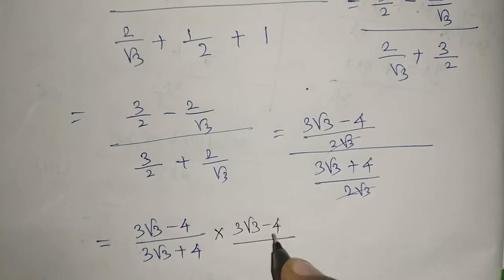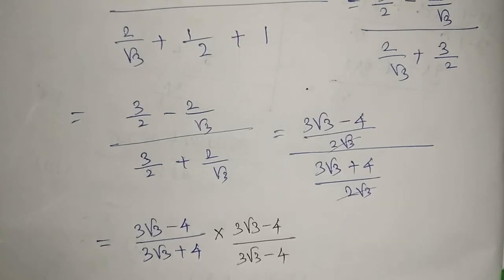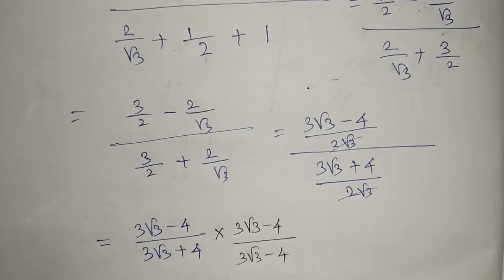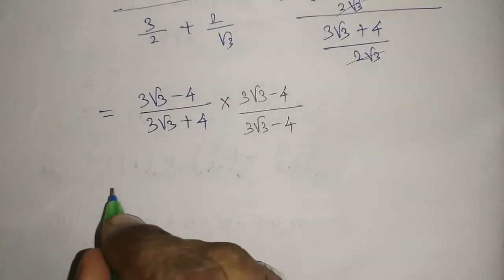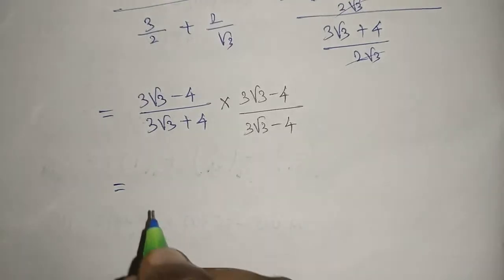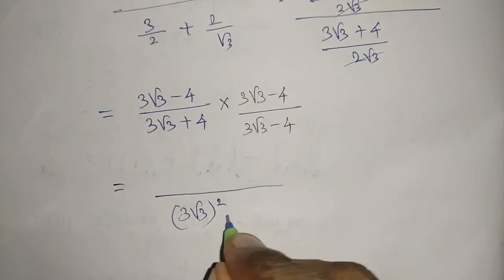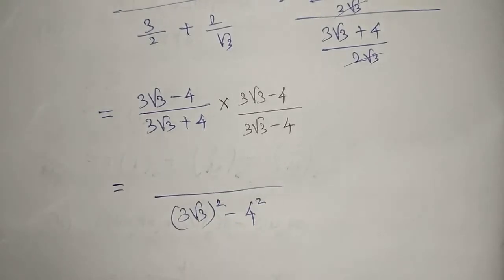Here we have plus, so multiply by minus. In the denominator we have a + b times a - b, so I am using the a² - b² formula. In the numerator, this is a - b times a - b.